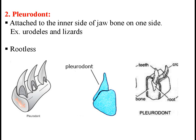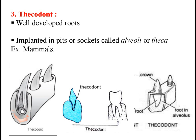In pleurodont type, teeth are attached to the inner side of jaw bone by their base on one side, as seen in the diagram. Such teeth are also rootless and found in urodeles and lizards. Thecodont type of teeth are found in mammals. Such teeth have well developed roots which are implanted in deep individual pits or sockets called alveoli or theca in the jaw bone, as seen in the diagram where roots are embedded in sockets. Hence, they are called thecodont.